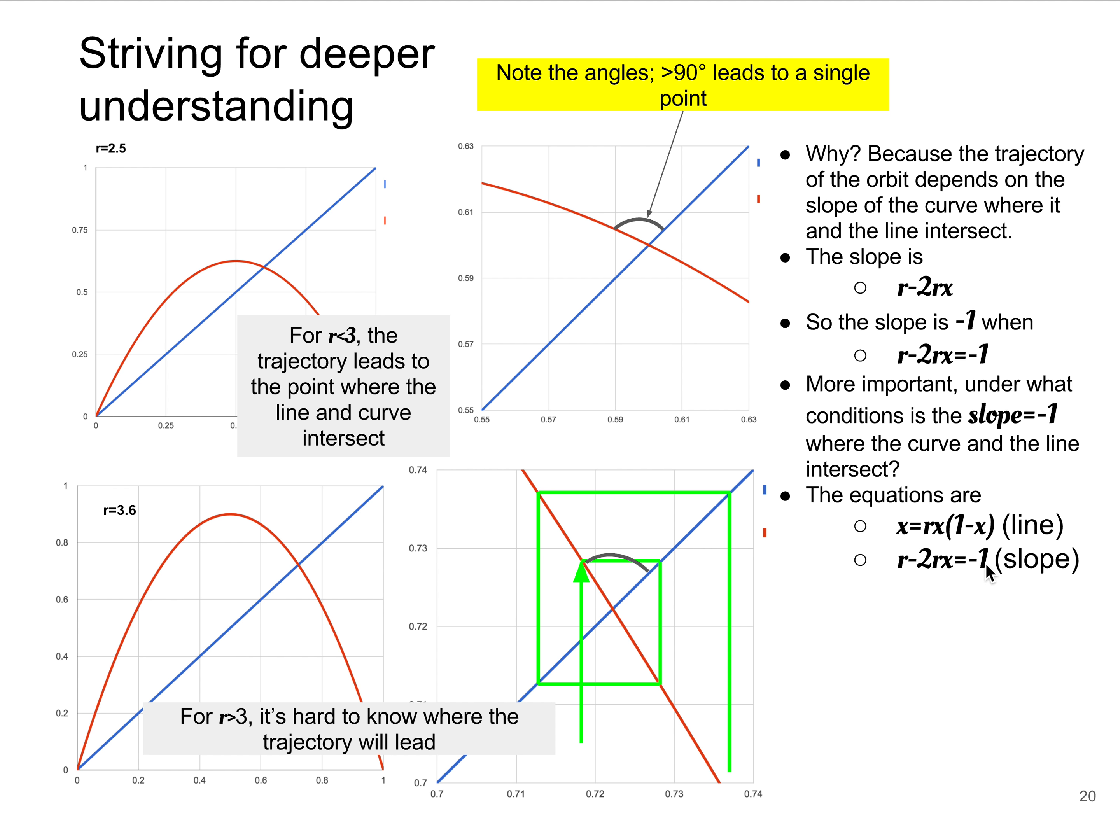And so now we have two equations and two unknowns. The unknowns are x and r. So we can do some arithmetic. You should be able to do it if you've got a little bit of algebra under your belt. And you'll find that this situation, where the slope of the red curve is minus 1 and intersects the straight line, where those points are the same, we find that x equals 2/3 and r equals 3. And indeed, we know from doing numerical experiments in prior slides that when r is equal to 3, we have a bifurcation.